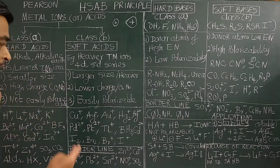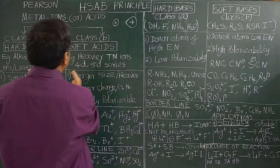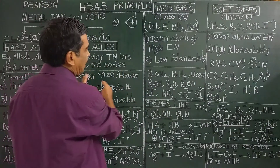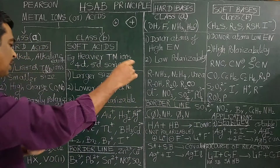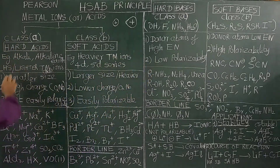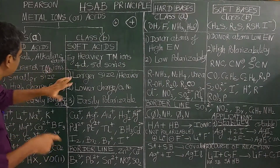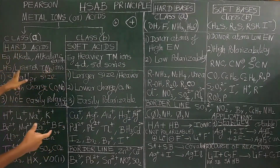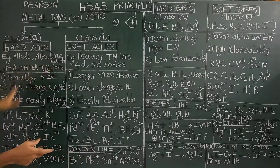Especially on the left-hand side of the transition metal series — for example, scandium, titanium — these lighter, left-hand-side transition metal ions are considered hard acids.